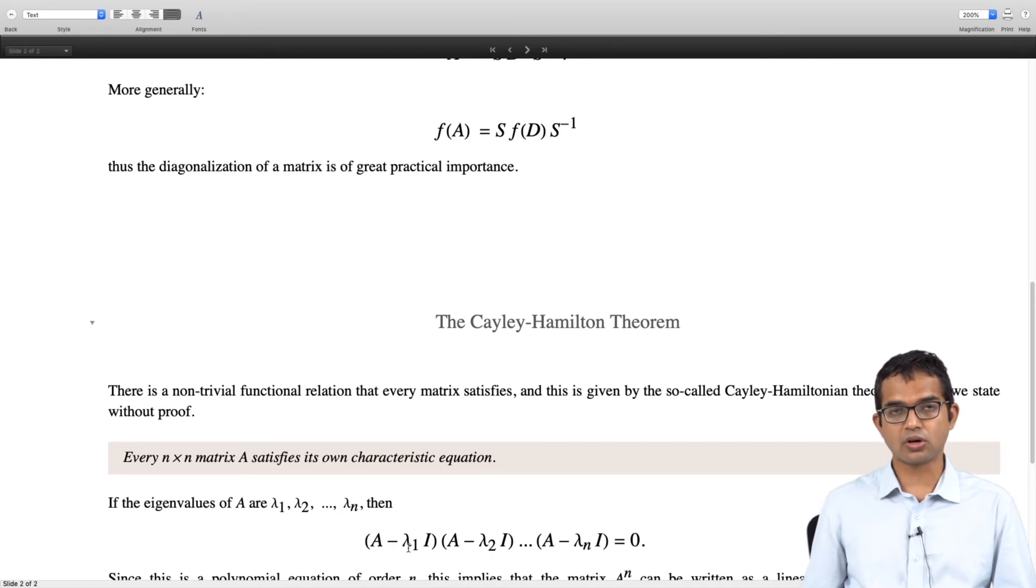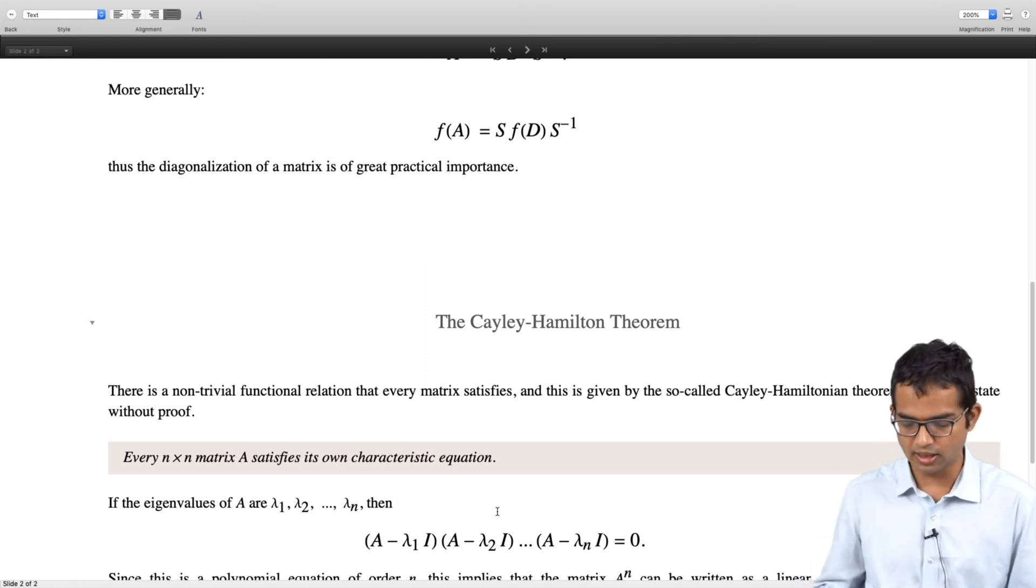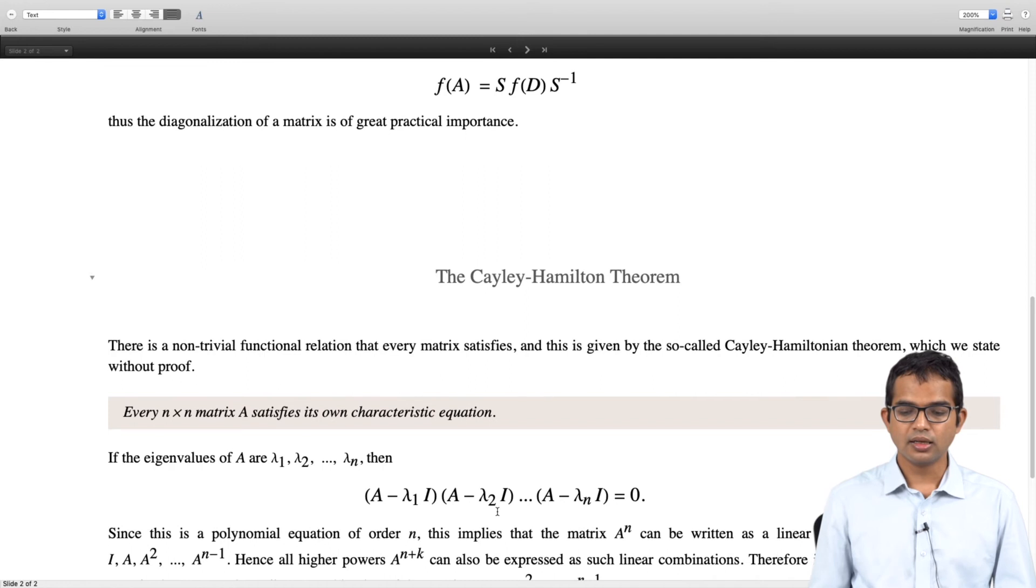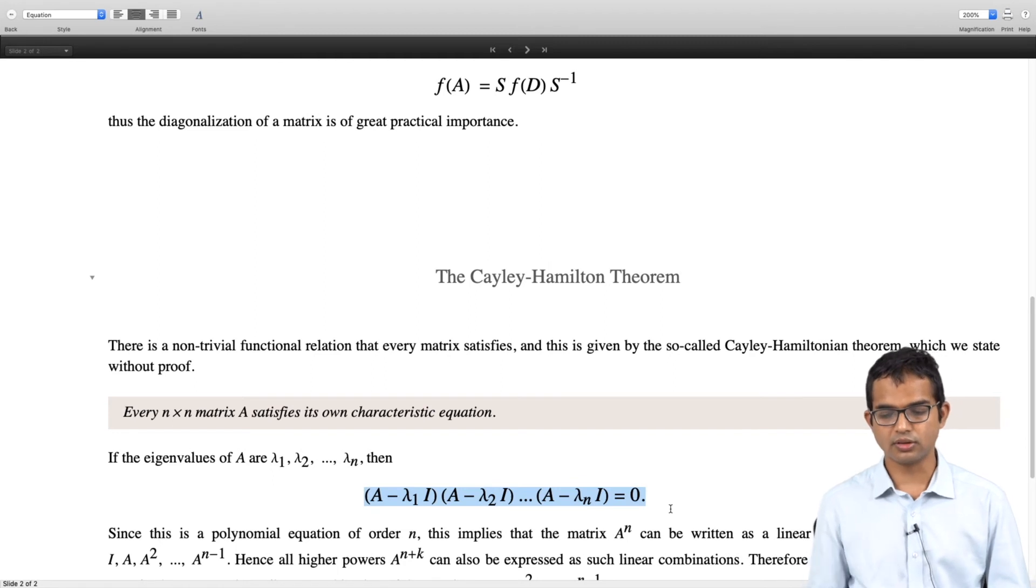So once you have got all these lambdas, notice that this is a statement about the eigenvalues. At this point we have not said anything about eigenvectors. This is true for any n by n matrix. You find all the eigenvalues, you can put your n by n matrix into the characteristic equation because it always exists for any n by n matrix, defective or not. This is not about eigenvectors. So this equation is satisfied by any matrix where the lambdas are the eigenvalues of this matrix.